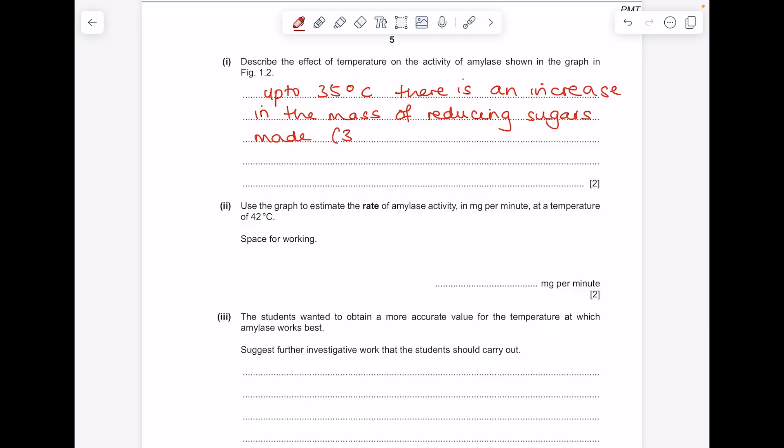So remember, 35 degrees is the optimum temperature. And then above 35 degrees C, there is a decrease in enzyme activity, as seen by reduction in the reducing sugar mass made.